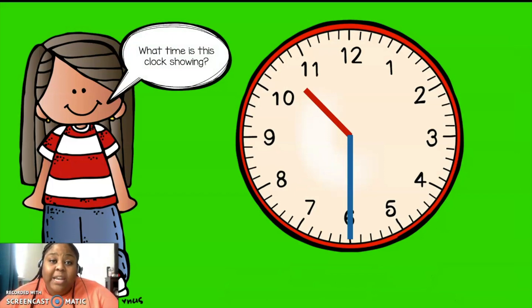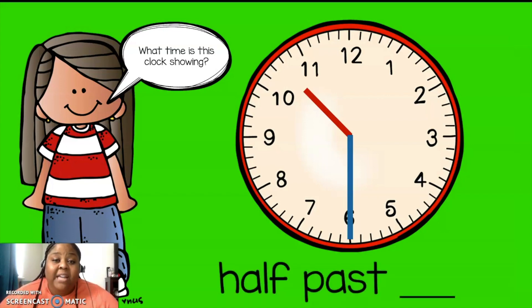What time is the clock showing now? Look at the minute hand. It is pointing to the six. So that means it's half past. Half past what? Again, I'm going to give you some thinking time. Looks like that hour hand is in between the 10 and the 11. So that means it's half past 10 o'clock. If you said half past 10 o'clock, give yourself a high five. Good job.